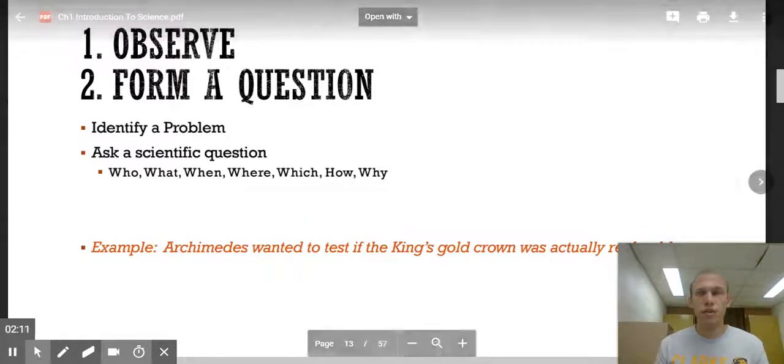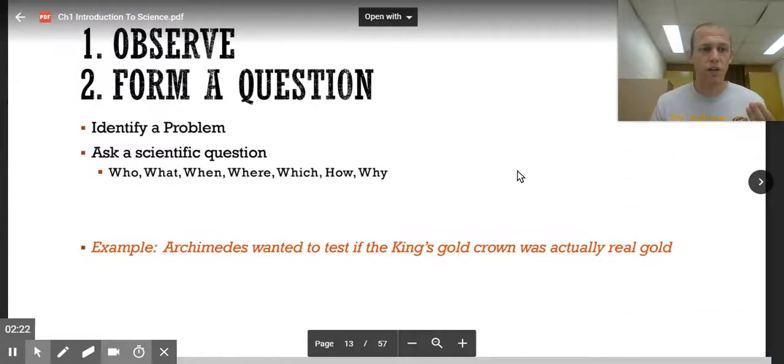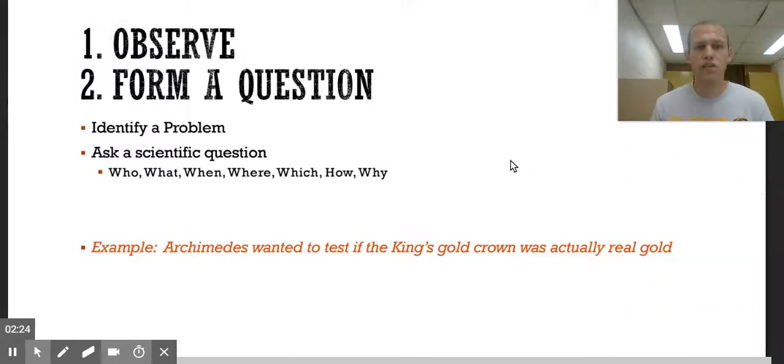Observe is number one, and form a question is number two. You need to know what your problem is, and then ask something that you want to know. For our example, we're going to talk about Archimedes, who wanted to discover if the king's gold crown was really gold. That's the question. Is the crown really gold?